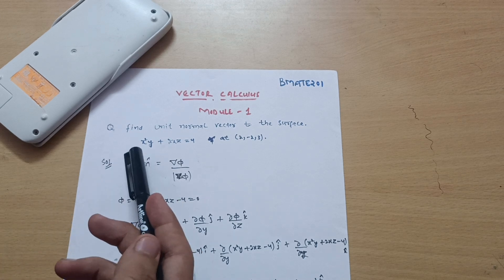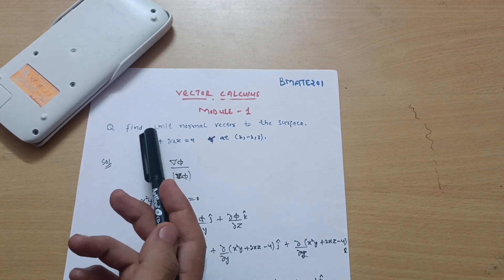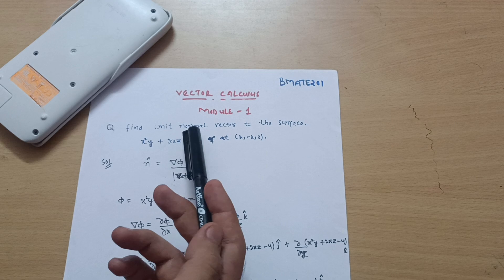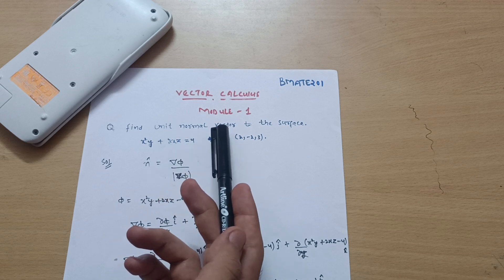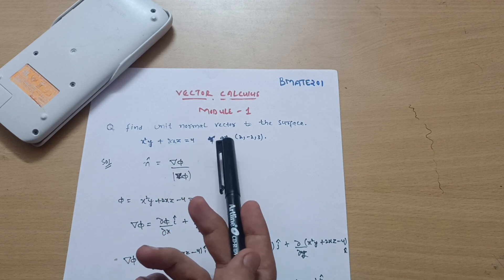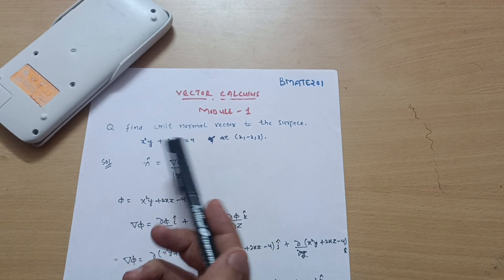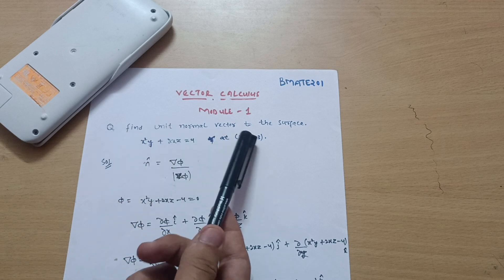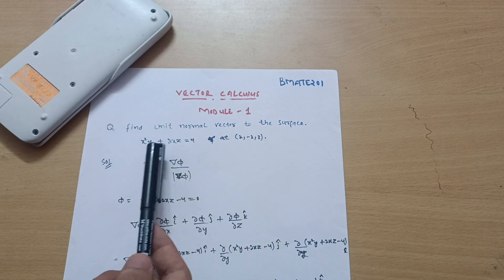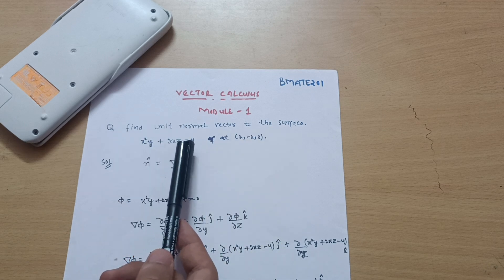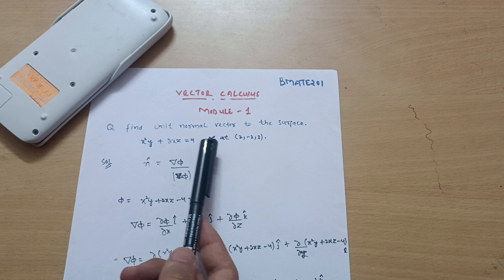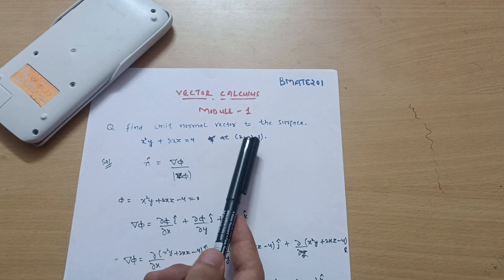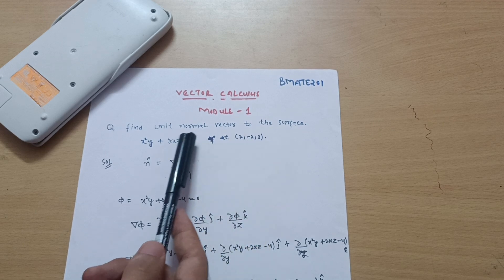Here specifically I will explain this particular topic: the normal vector. Later on we will solve varieties of problems. So find a unit normal vector to the surface x²y + 2xz = 4 at the point (2, -2, 3).